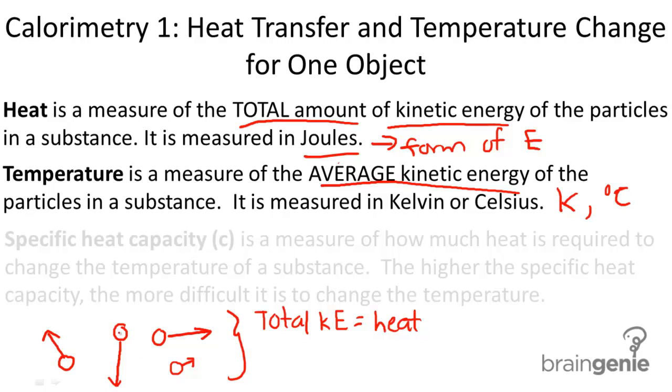Now, they're all moving at different speeds, so they all have different kinetic energies. The average kinetic energy of the particles tells you what is the temperature.